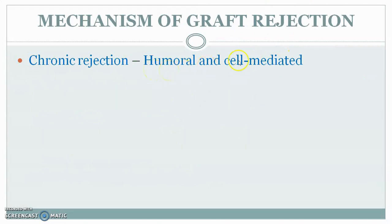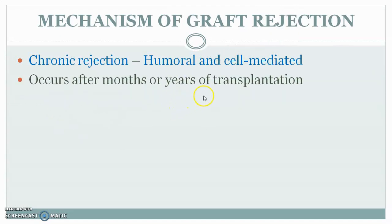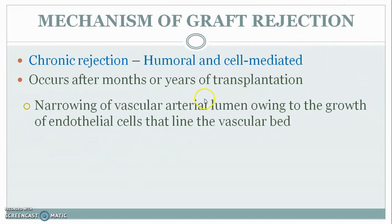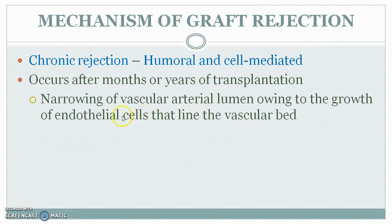Chronic rejection involves both cell-mediated and humoral (antibody) responses, and occurs after years of transplantation. In chronic rejection, the vascular arterial lumen of the graft gradually narrows due to the growth of endothelial cells lining the blood vessels.